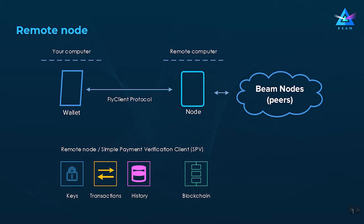For this purpose we use a separate protocol called the fly client protocol, created by Benedikt Bünz. It allows the wallet to verify the information received from the node even though the wallet does not have direct access to the current blockchain state. This is very important because the node could be lying or providing false information, and the fly client protocol lets the wallet verify that the answers it receives represent the correct state of the blockchain.